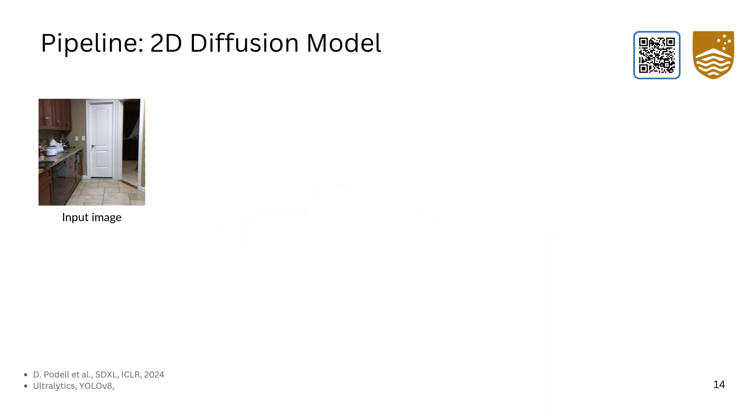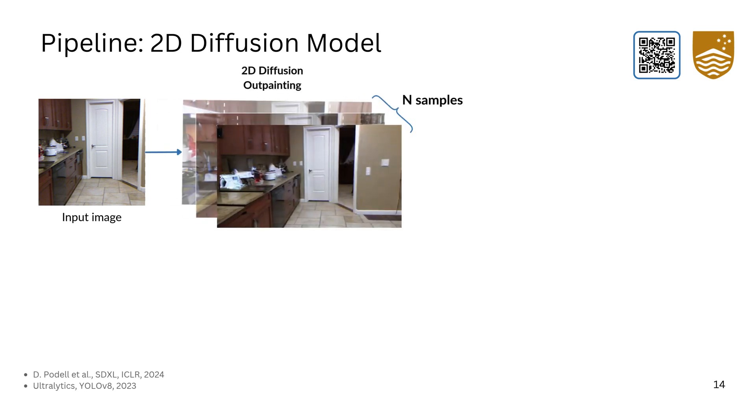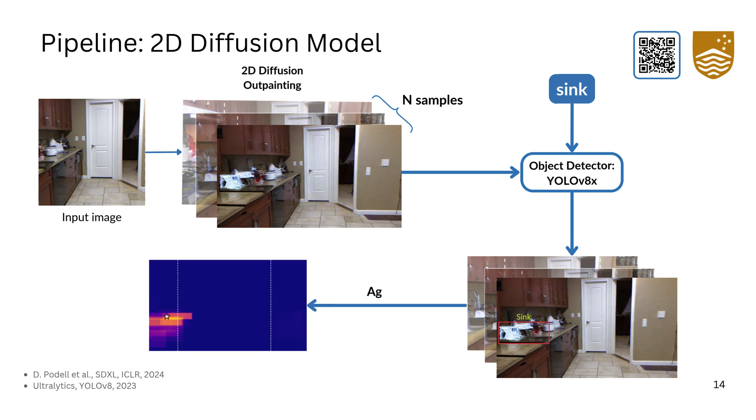In our next pipeline, we integrate the stable diffusion XL model with semantic prompts to perform visual outpainting. Next, we use an object detector model YOLO V8X to extract bounding box predictions which we aggregate into a normalized heatmap.